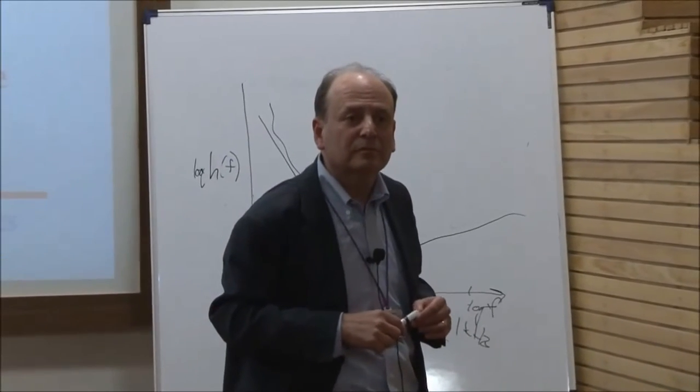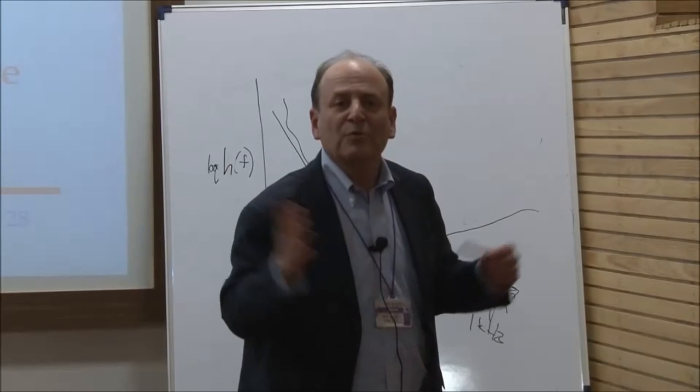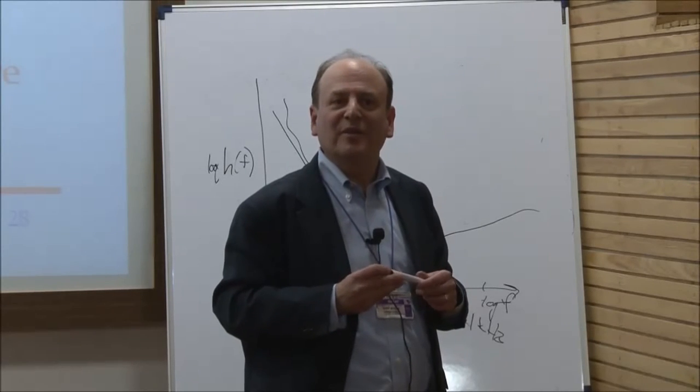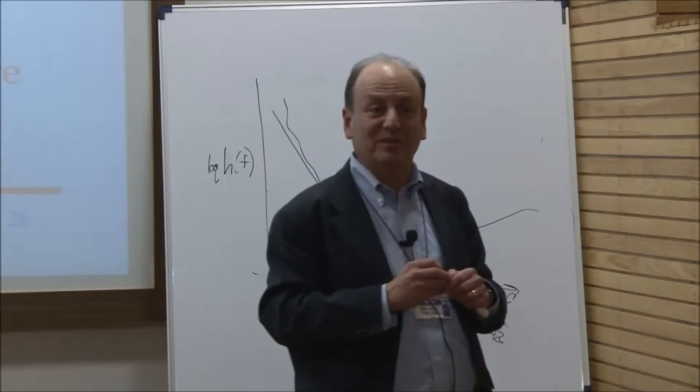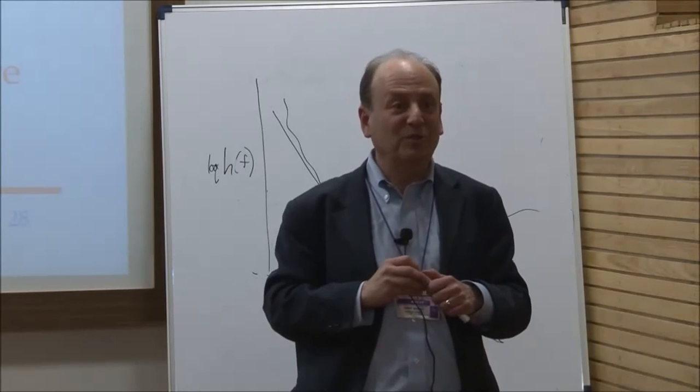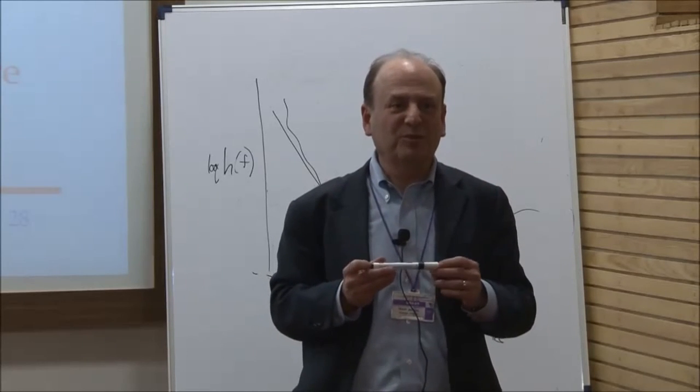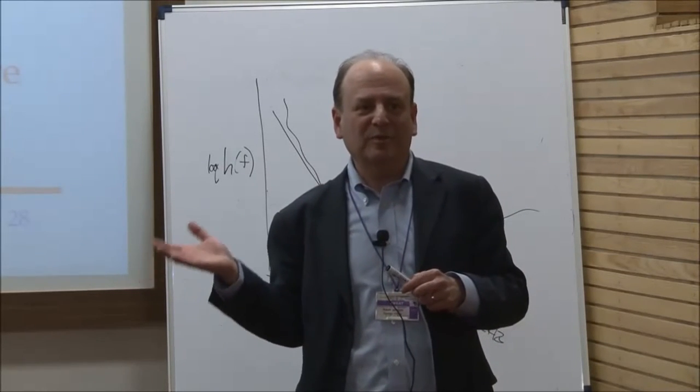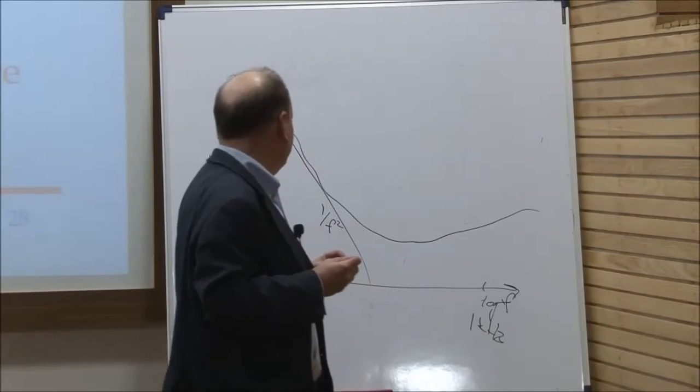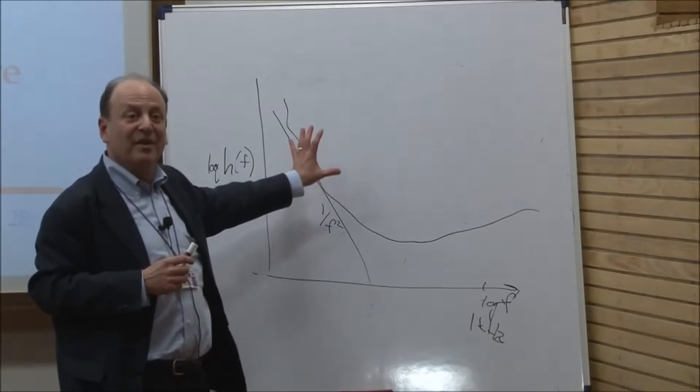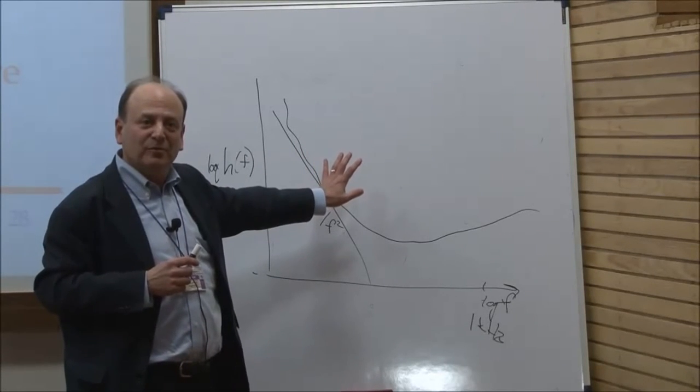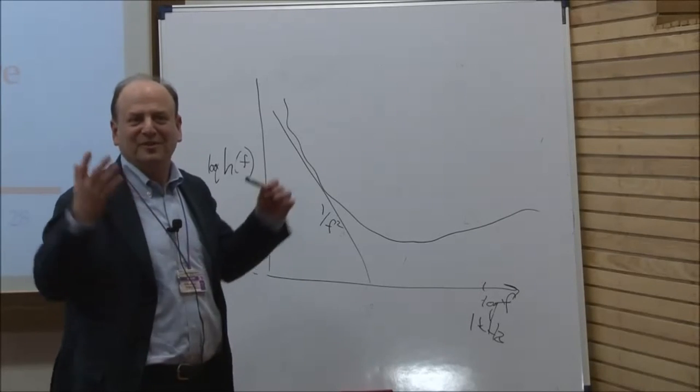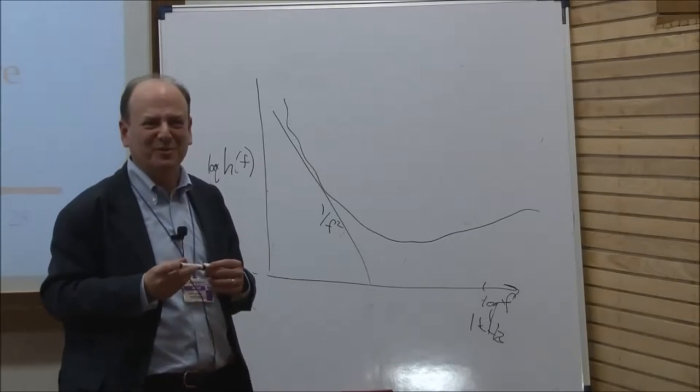In initial LIGO it was true that seismic noise dominated. One of the other amazing things about advanced LIGO is the seismic noise isolation is going to be good enough that your statement, which was true for initial LIGO, will not be true at all frequencies for advanced LIGO. At the power levels we're going to use and with the seismic isolation we'll have, there is a band where radiation pressure noise is large enough to be dominant. It's one of the engineering miracles of the move to advanced LIGO.